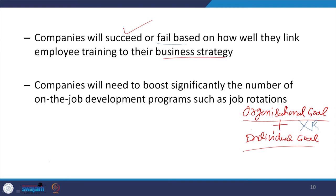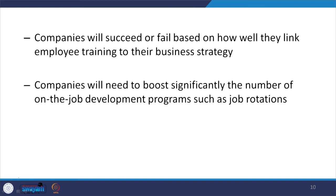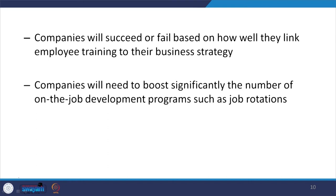Connecting individual training programs to the organization will decide success or failure. If individual goals are not matching, employees will leave the organization, and organizational goals will not be achieved. Companies will need to significantly boost the number of on-the-job development programs such as job rotations. On-the-job training is very important when you want to develop practical implications, while classroom training handles conceptual learning.